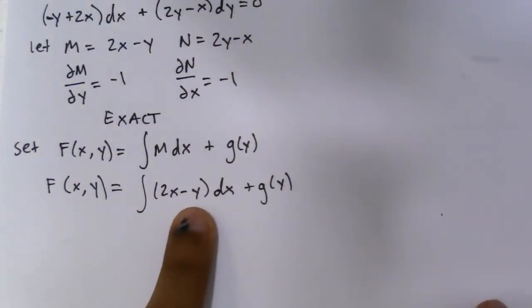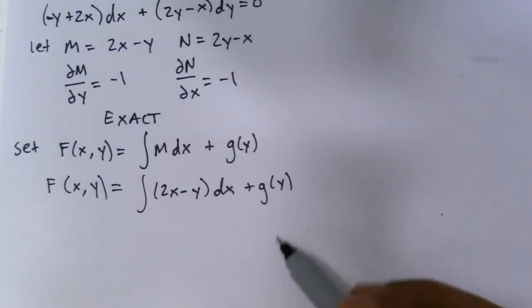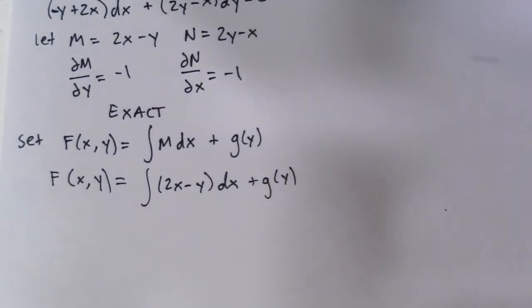Now you might be thinking, oh, there's a y here. We can't do this integral. Well, in this case, we're going to assume y is a constant, and just ignore it, and just treat x as a variable, and integrate it with respect to x. It's like doing the partial derivatives, but with partial integration, I guess. I don't know what you would call it.